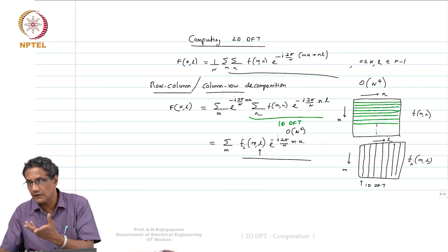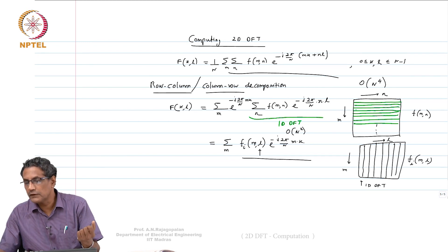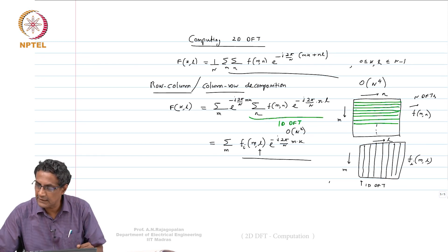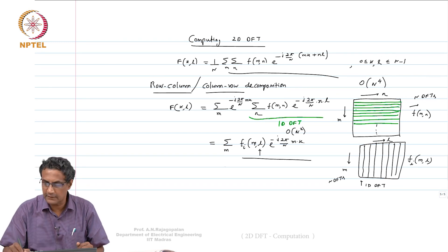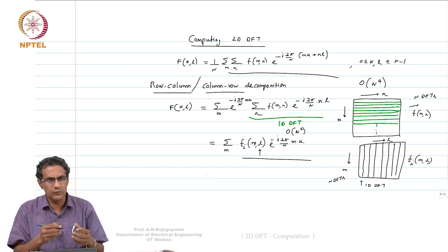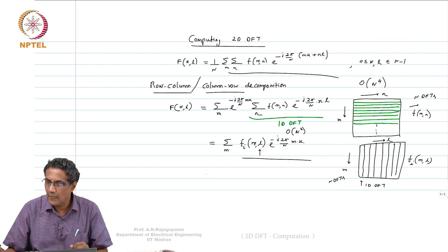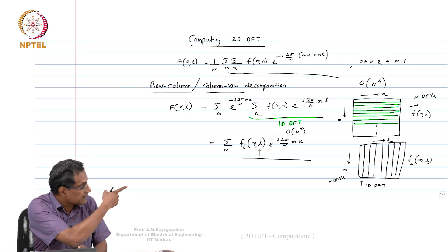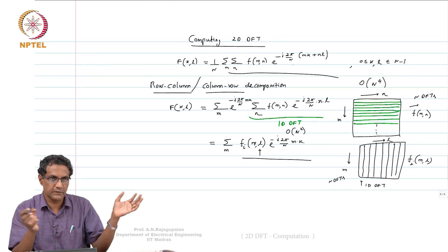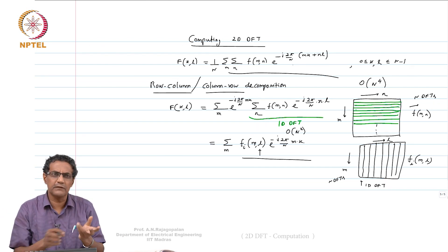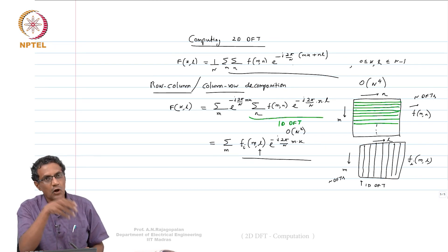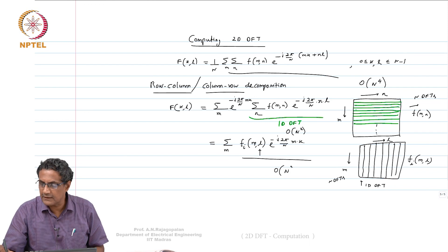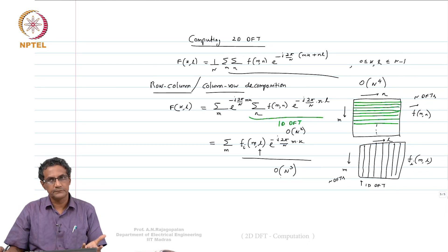If you do order N squared brute force, you have to do N DFTs for all the rows and then another N DFTs for all the columns. If you do that, you are done and you get your F of K comma L. So you have to do 2N 1D DFTs. This is happening because of separability — the complex exponential is separable and therefore we could pull the M out. That is why it is row-column or column-row. So this will require order N cubed, because you have 2N 1D DFTs.